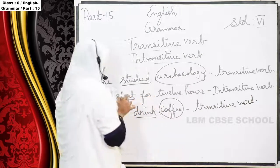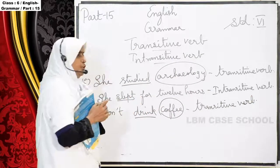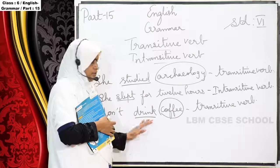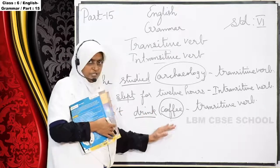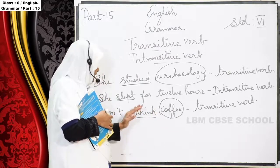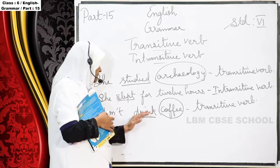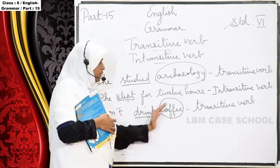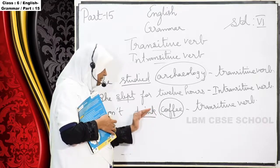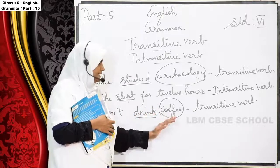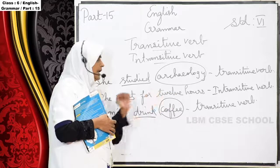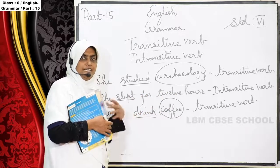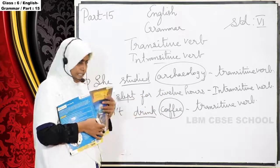'I don't drink coffee.' Drink is the verb, it takes the object. What didn't he drink? 'Coffee.' So drink is the verb, coffee is the object, and in a sentence if you have the object, we call it a transitive verb.